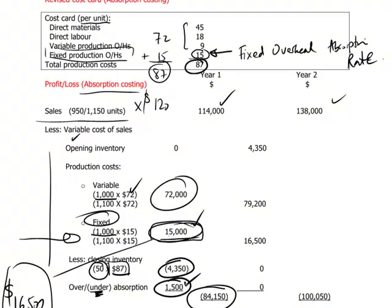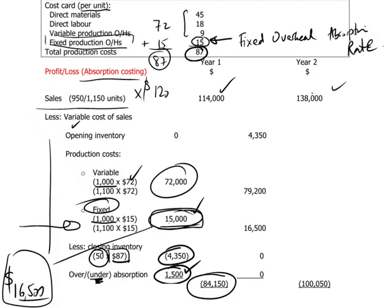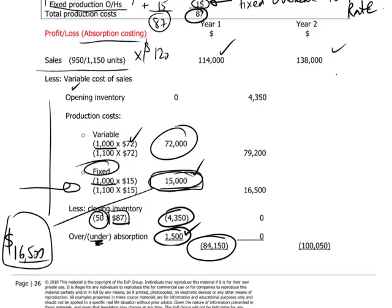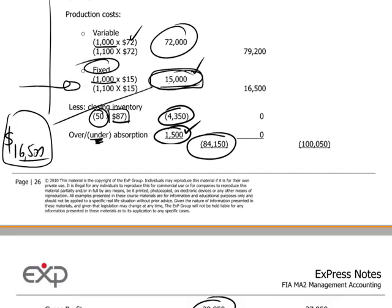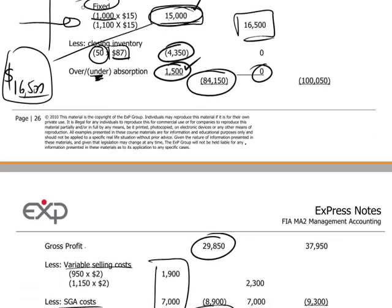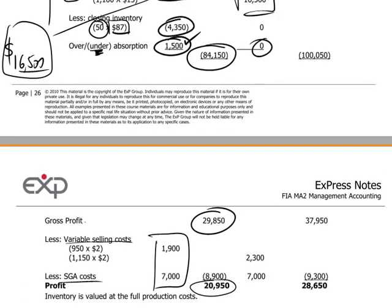The candidate is now invited to do the year two calculation following the absorption costing principle, taking it through all the steps. There is no over- or under-absorption in year two — that remains for the candidate to verify — and you should arrive at a profit figure under the absorption costing method for year two of $28,650.